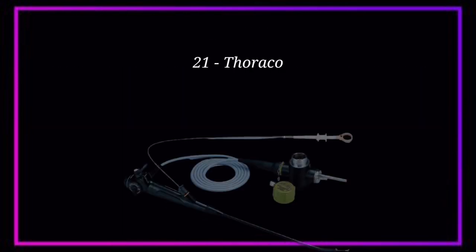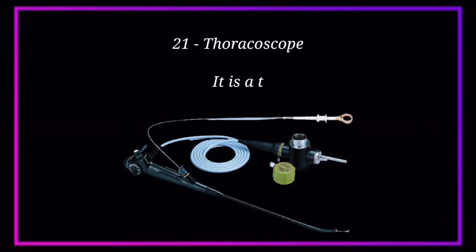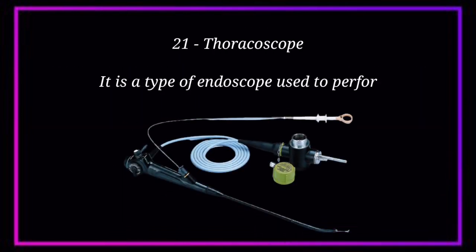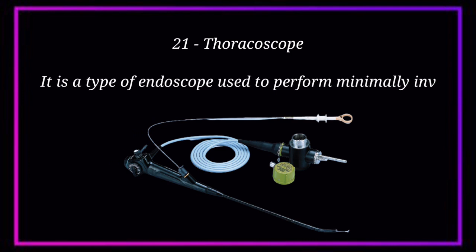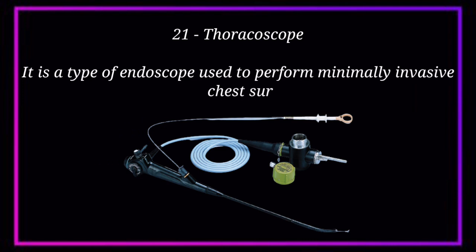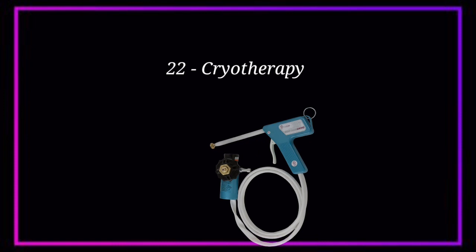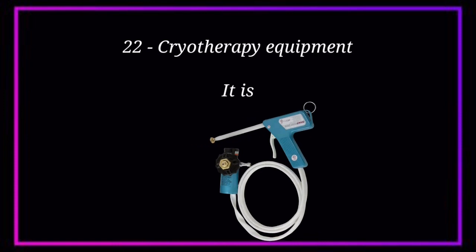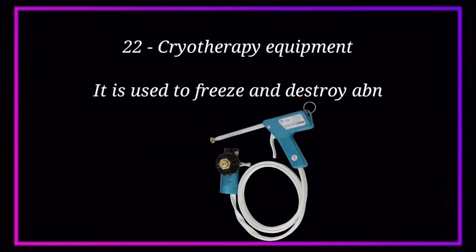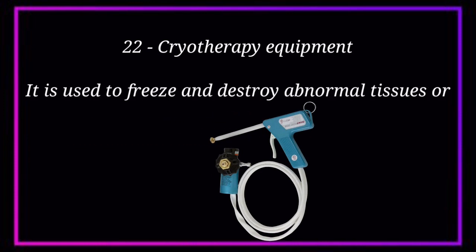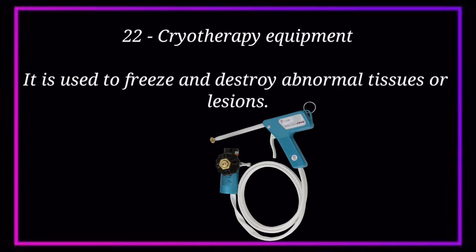Number 21. Thoracoscope. It is a type of endoscope used to perform minimally invasive chest surgery. Number 22. Cryotherapy Equipment. It is used to freeze and destroy abnormal tissues or lesions.